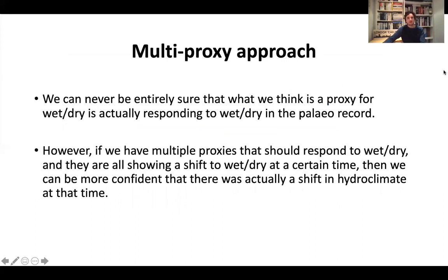Finally, ideally we would never want to use just one proxy to reconstruct past climate, because so many things could influence proxies. Sometimes the oxygen isotopes may respond to something else, such as a change in precipitation source. The more proxies we have — like diatoms, pollen, X-ray scanning, ITRAX scanning of these sediment cores alongside the isotopes — the more robust our interpretation becomes.